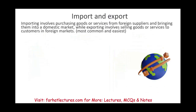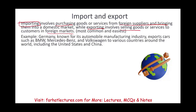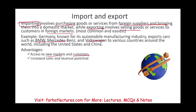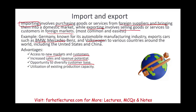Import and export is the most common and easiest way to conduct international business. Importing is when you buy from a foreign supplier; exporting is when you sell to a foreign market. For example, German companies like BMW, Mercedes, and Volkswagen sell their products overseas to countries including the US and China. Advantages include access to new markets and customers, increased sales and potential revenue, opportunity to diversify your customer base, and utilization of existing production capacity that you may not currently be using.